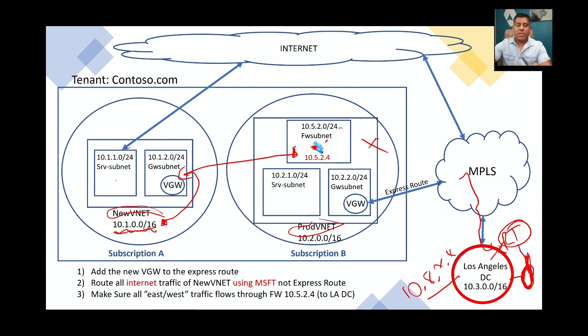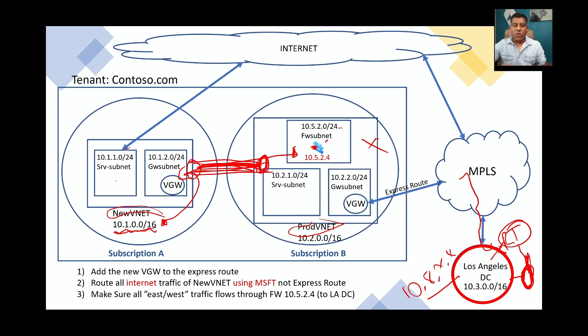We assign the server route table to the server subnet and the VGW route table to the gateway subnet. With the VNet peering in place, traffic flows through the peering and everything ties together. In the demo portion I'll go into the portal to set up the route tables and show how it's configured — though I don't have a live MPLS circuit. That's the end of part one — check out the next video for the full portal configuration. Hope you enjoyed it — give it a thumbs up and subscribe!